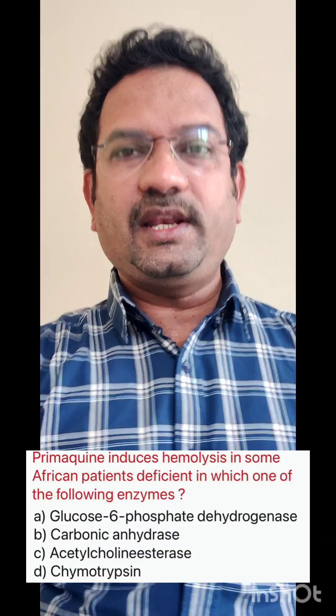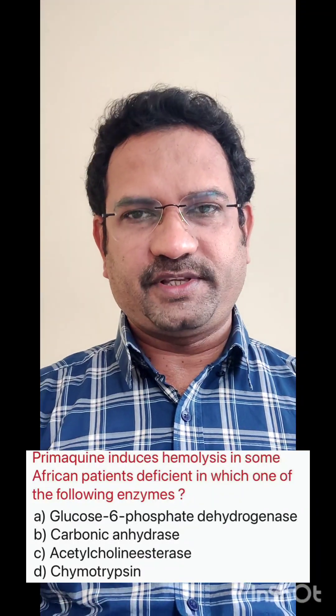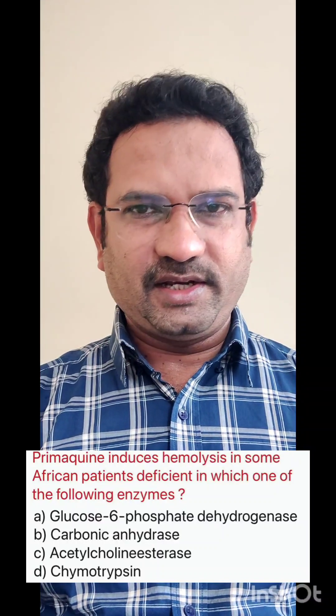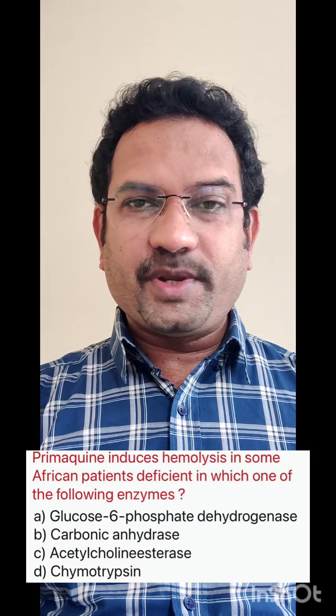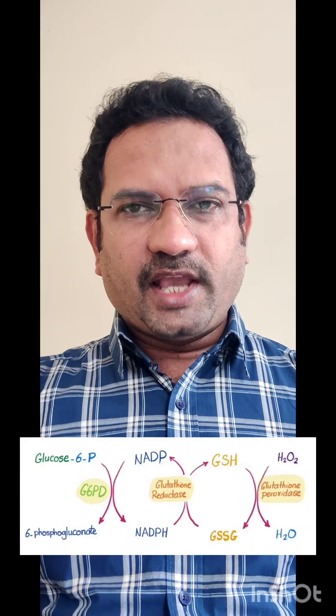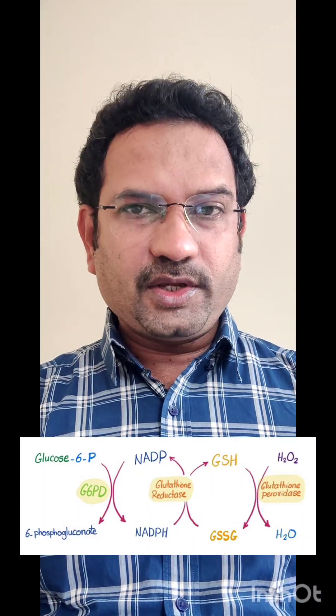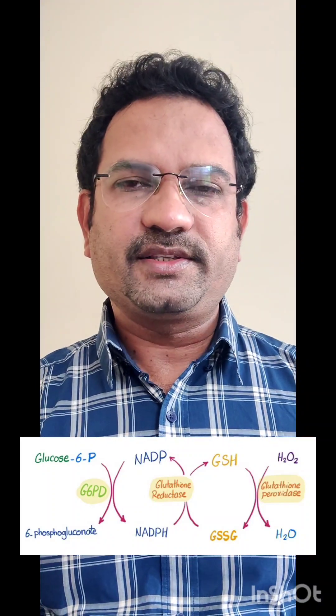Next question: primaquine induces hemolysis in African patients deficient in which of the following enzymes? Options: glucose-6-phosphate dehydrogenase, carbonic anhydrase, acetylcholinesterase, and chymotrypsin. Primaquine is widely used to treat malarial infection, but it causes hemolysis in patients deficient in glucose-6-phosphate dehydrogenase. This enzyme is essential in the HMP shunt pathway — the hexose monophosphate shunt, also known as the pentose phosphate pathway. This enzyme generates NADPH, which reduces glutathione. The reduced form of glutathione is essential in neutralizing free radicals, so if free radicals are not neutralized they cause hemolysis.